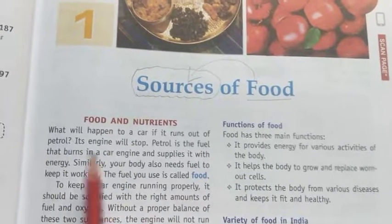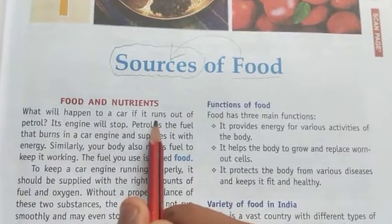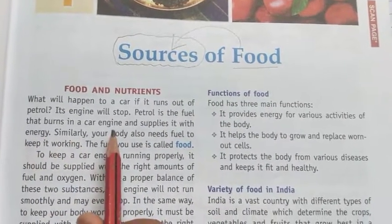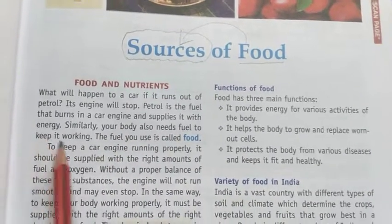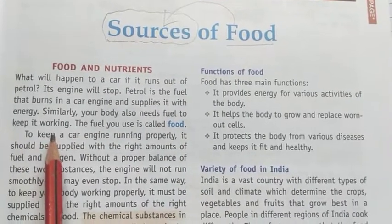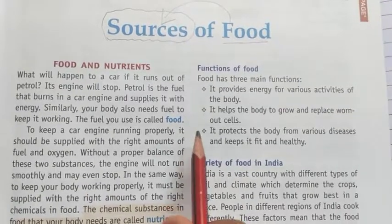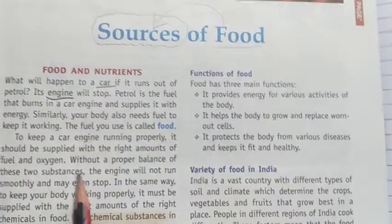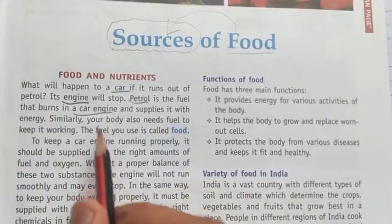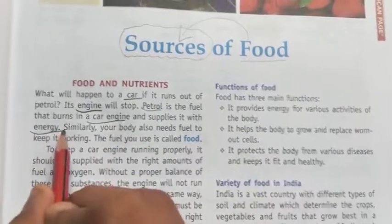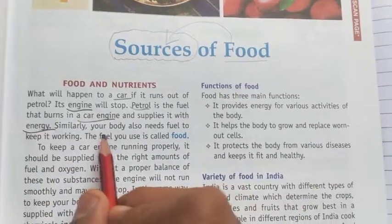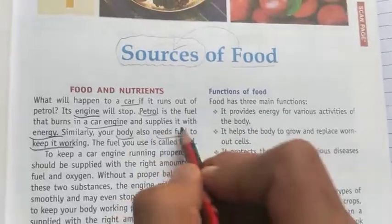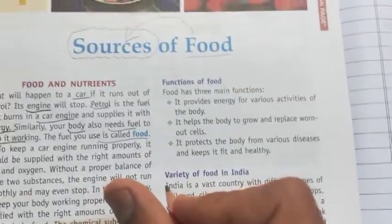First I will do a basic reading, then we will come on to the explanation. What will happen to a car if it runs out of petrol? Its engine will stop. Petrol is the fuel that burns in the car engine and supplies it with energy. Similarly, your body also needs fuel to keep it working. In this first paragraph they are comparing ourselves with the car engine — we need petrol to run the engine, and that petrol supplies the energy, but similarly our body also needs fuel. That fuel is food, which we take in the morning and at night.